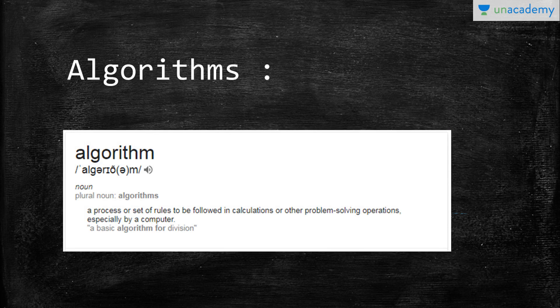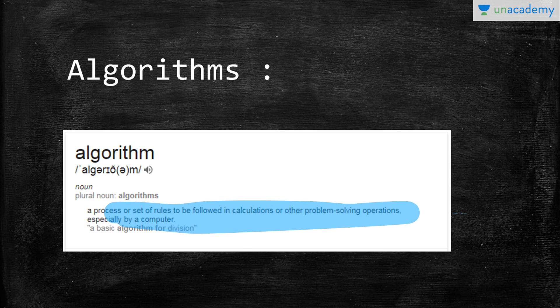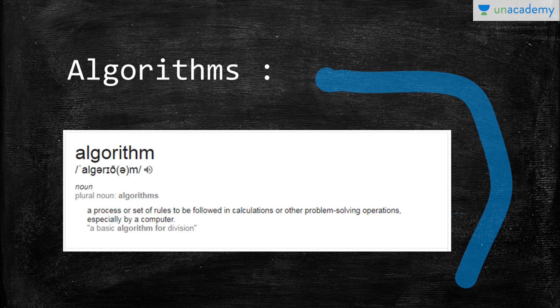For the next topic: algorithms. Algorithms are a set of rules to be followed in calculation and problem-solving, especially by a computer. This will be a topic that we'll be discussing in further chapters. If you have any doubts or queries, you can ask me in the description of my profile. Thank you.